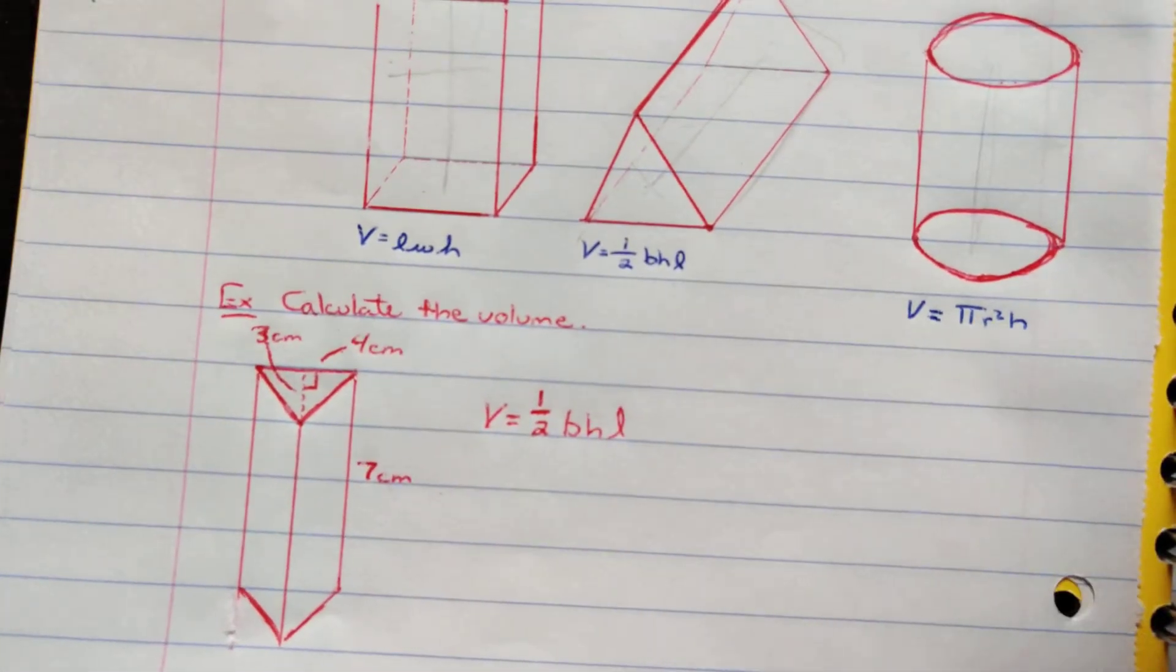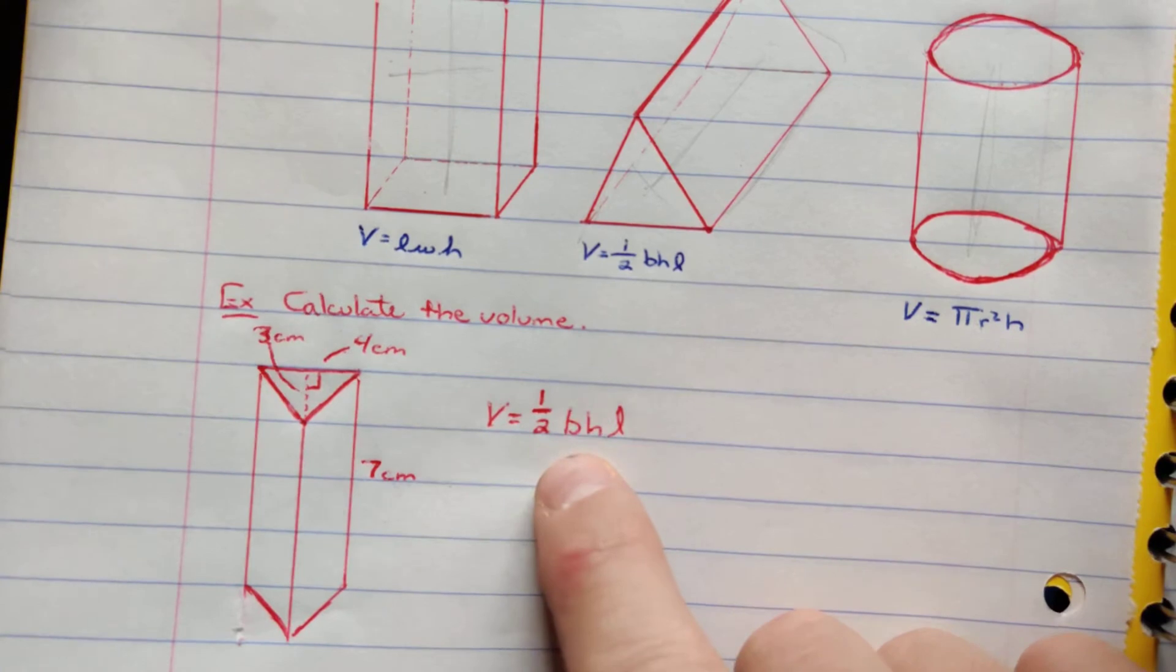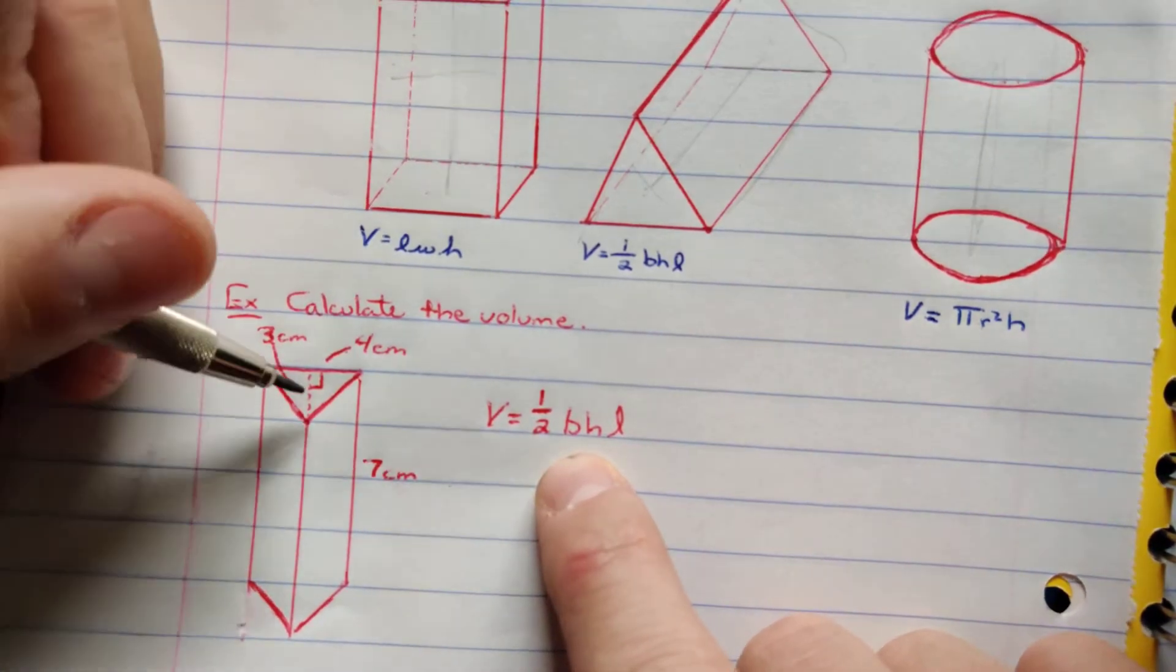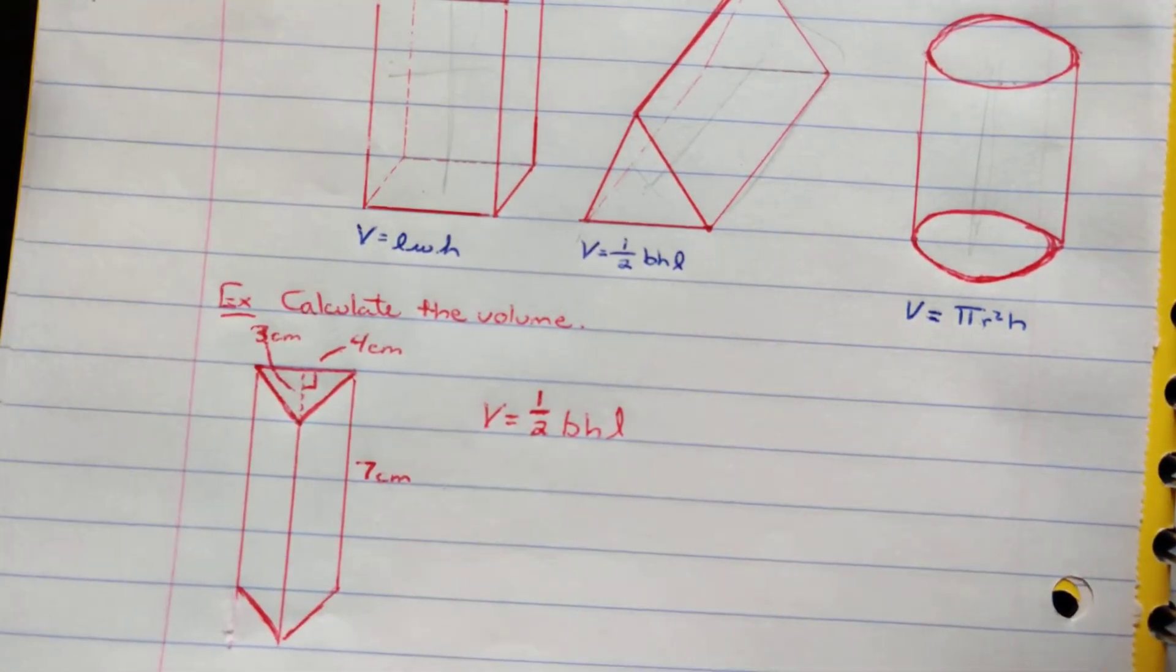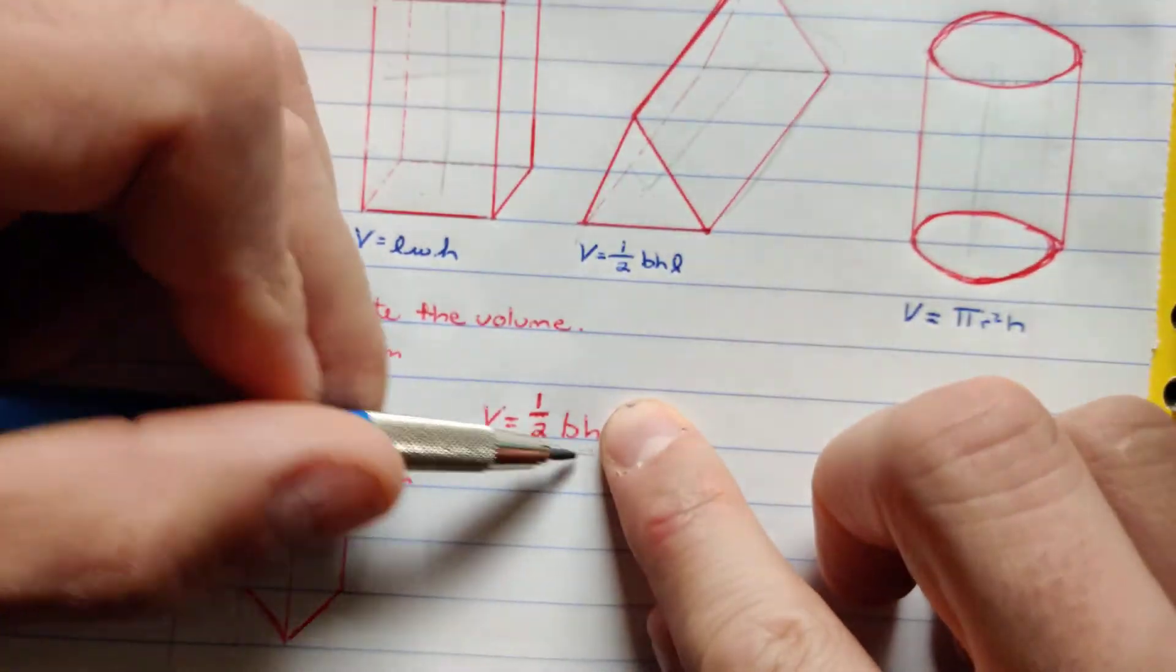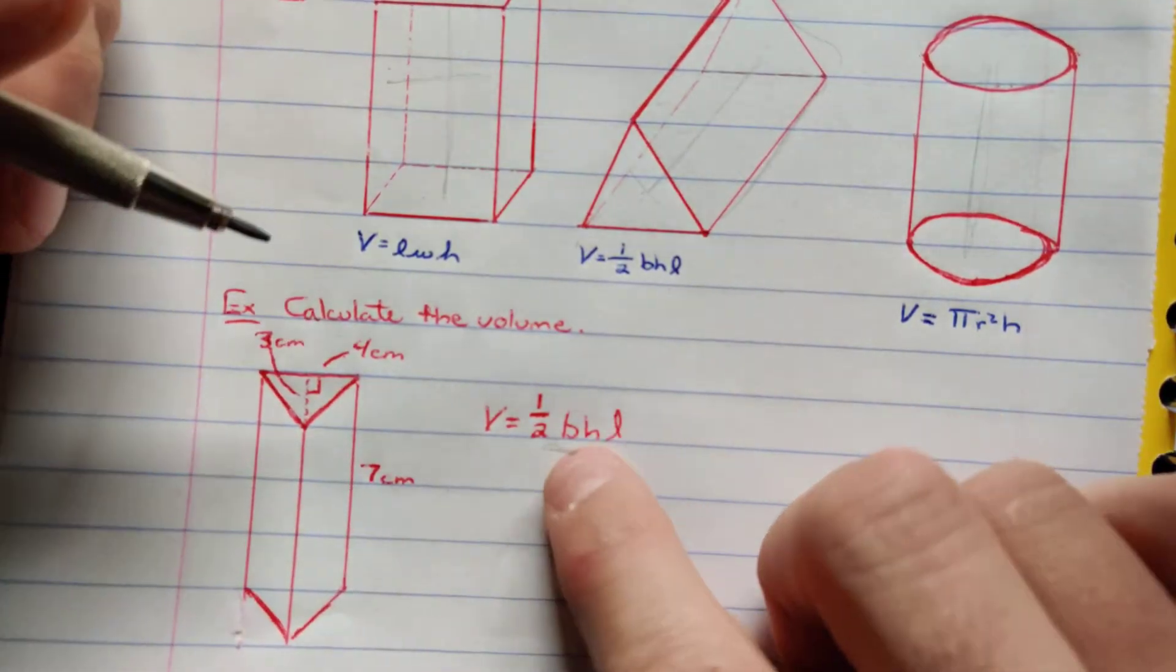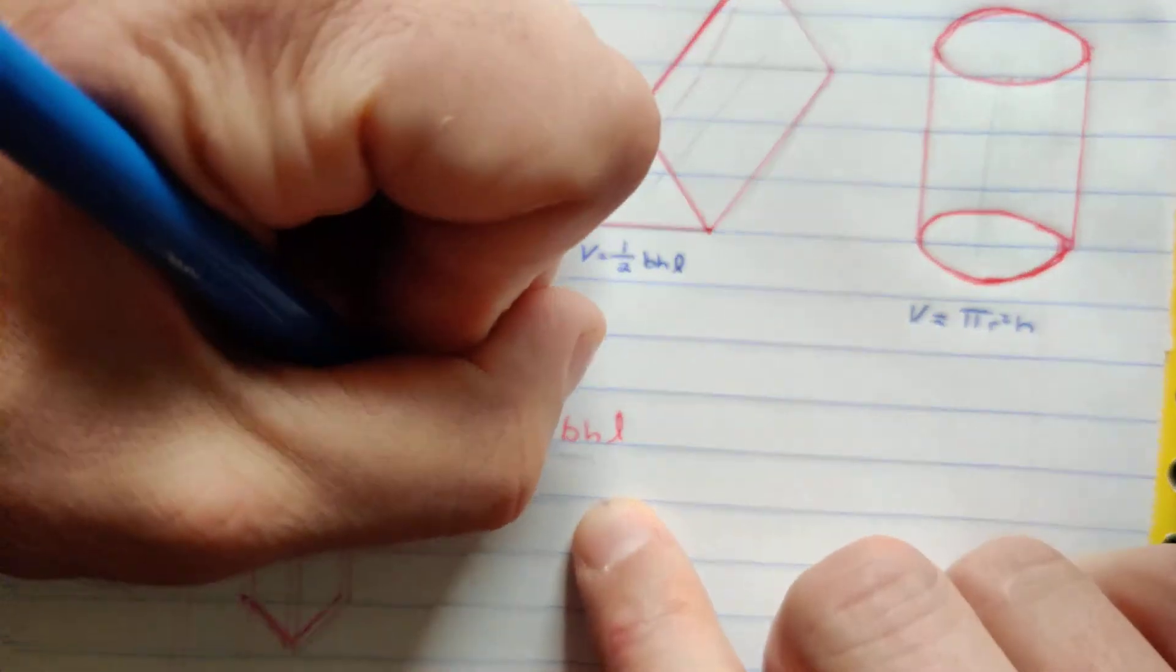So as an example, here we got one-half base times height times length for a pyramid here. I'm going to get the volume of that. So I got a height on this triangle of three. Yes, the triangle is tilted. That's fine, though. Again, we're focused on the area of the triangle and then the extra dimension that we're multiplying. So three, four, and seven.